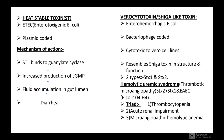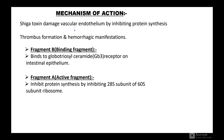Entero-aggregative E. coli O104:H4 is also associated. The triad of hemolytic uremic syndrome comprises thrombocytopenia, acute renal impairment, and microangiopathic hemolytic anemia. The mechanism of action of Shiga-like toxin: it damages the vascular endothelium by inhibiting protein synthesis, causing thrombus formation and hemorrhagic manifestations. Fragment B binds to globotriaosylceramide GB3 receptor on intestinal epithelium. Fragment A inhibits protein synthesis by inhibiting the 28S subunit of the 60S ribosomal subunit.